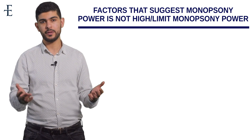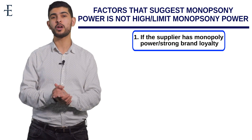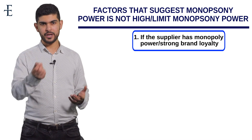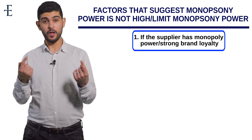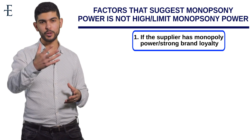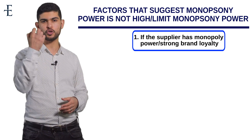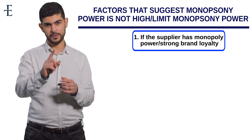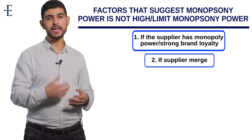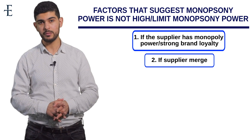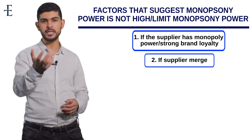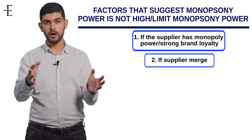Now for factors suggesting monopsony power is not high. Number one: can Tesco dictate price to Coca-Cola? Probably not, because Coca-Cola themselves are a monopoly. Monopoly power can offset monopsony power — they cancel each other out. Strong firms or strong brand loyalty will therefore limit monopsony power. Number two: if suppliers merge, reducing from 1,000 farms down to 10, they become more powerful and it is not as easy for a supermarket to bully or dictate prices to them.